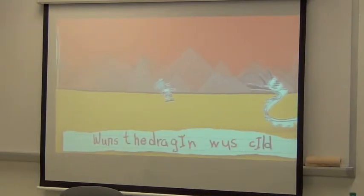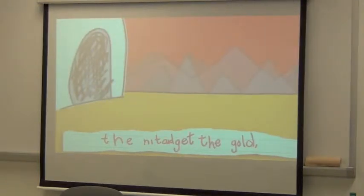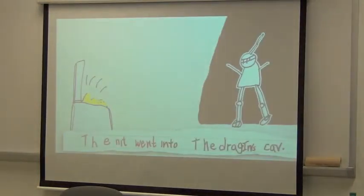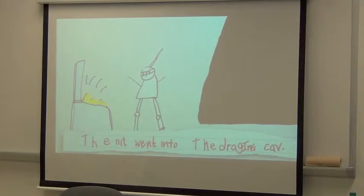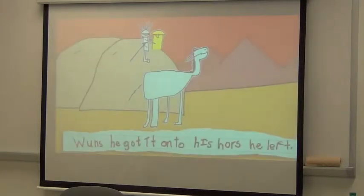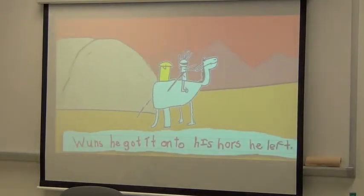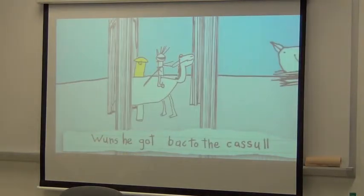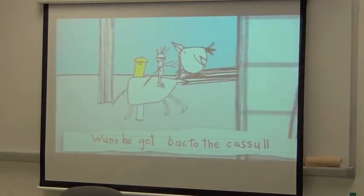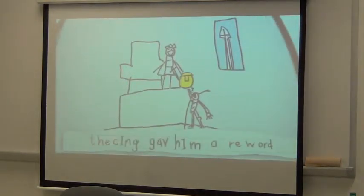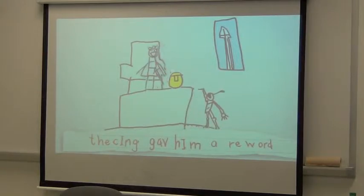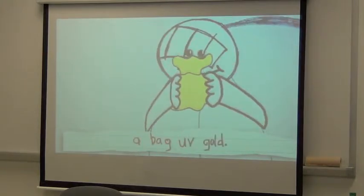The knight killed the dragon. When the dragon was killed, the knight could get the gold. The knight went into the dragon's cave. When he got it onto his horse, he left. When he got back to the castle, the king gave him a ringer, a bag of gold.